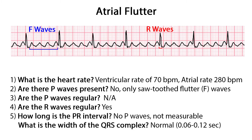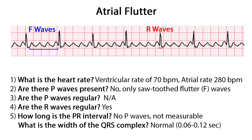Step 3: Are the P waves regular? There are no P waves, so this doesn't apply. Step 4: Are the R waves regular? Measuring from the beginning of one QRS complex to the beginning of the next, the QRS complexes, or R waves, occur at regular intervals — though sometimes they can be irregular also. Step 5: How long is the PR interval? Since there are no P waves, it is not measurable. What is the width of the QRS complex? They are all normal, falling between 0.06 to 0.12 seconds.